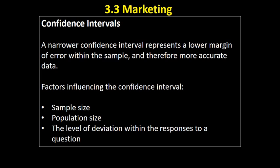Several factors influence the confidence level. First and potentially most important is sample size. A bigger sample size will tend to be more representative of the overall population, although there are diminishing returns — sampling a thousand people rather than 100 will give more accurate results, but sampling ten thousand may not add that much additional value. Generally, a larger sample size will tend to lead to a narrower confidence interval.